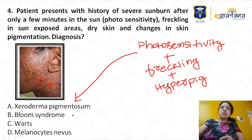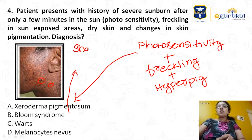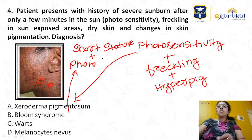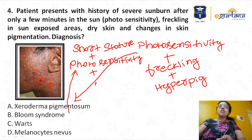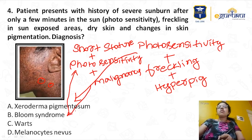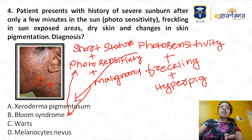Bloom syndrome is characterized by a triad of short stature, photosensitivity, and predisposition to malignancies — don't get confused. Photosensitivity, freckling, and hyperpigmentation are the characteristic features of xeroderma pigmentosum.